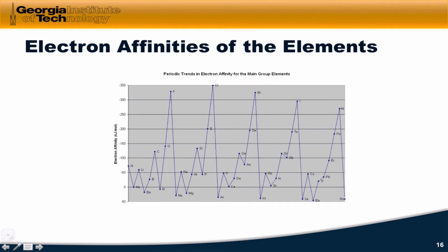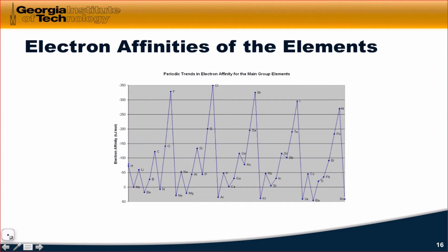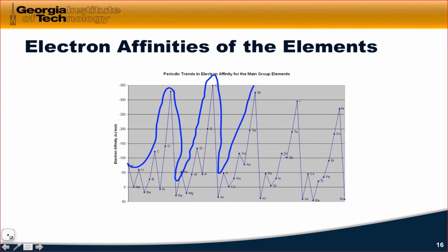Here is a plot that shows electron affinity as a function of atomic number with all of the elements labeled. If we follow the general trend, we get an upward rise followed by an abrupt decrease, followed by another upward rise and an abrupt decrease, and on and on as we go. So again, this is periodic behavior — it has a nice sawtooth shape.